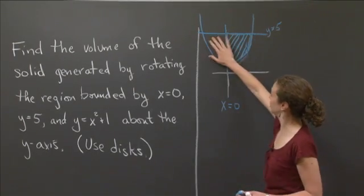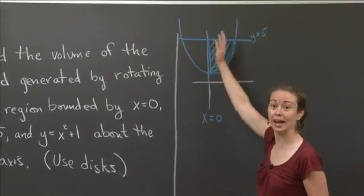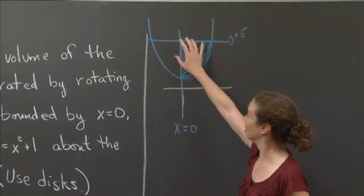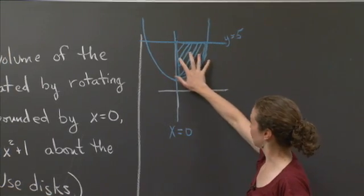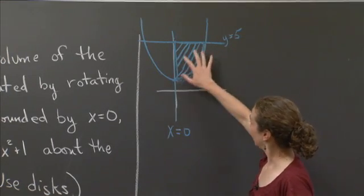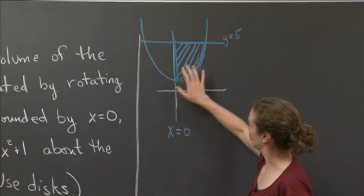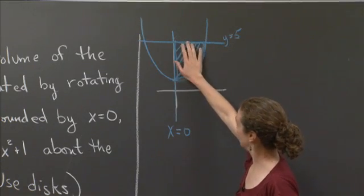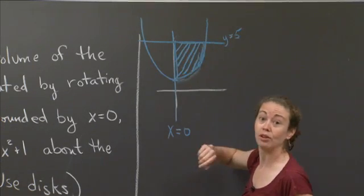Notice that if I also included this region, when I rotated that around, I'd actually get the same solid, whether I included this region or not. But in terms of doing the integration, I want to make sure I don't count anything doubly. So I'm just looking at what happens when I take this piece, and I rotate it around the y-axis.